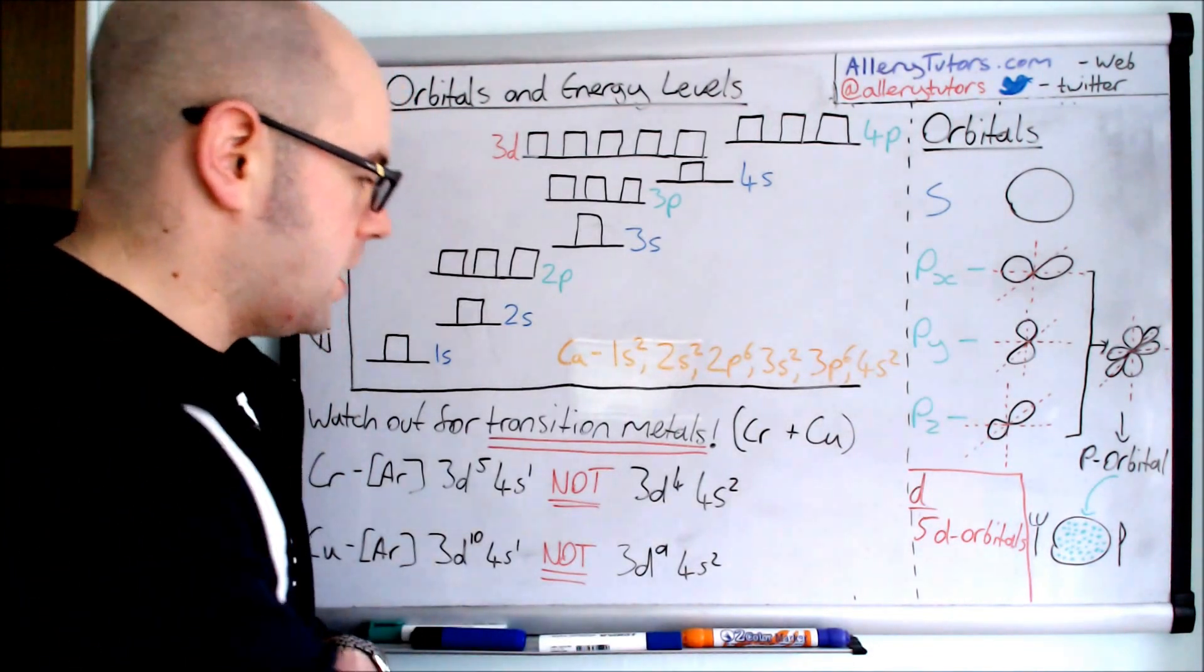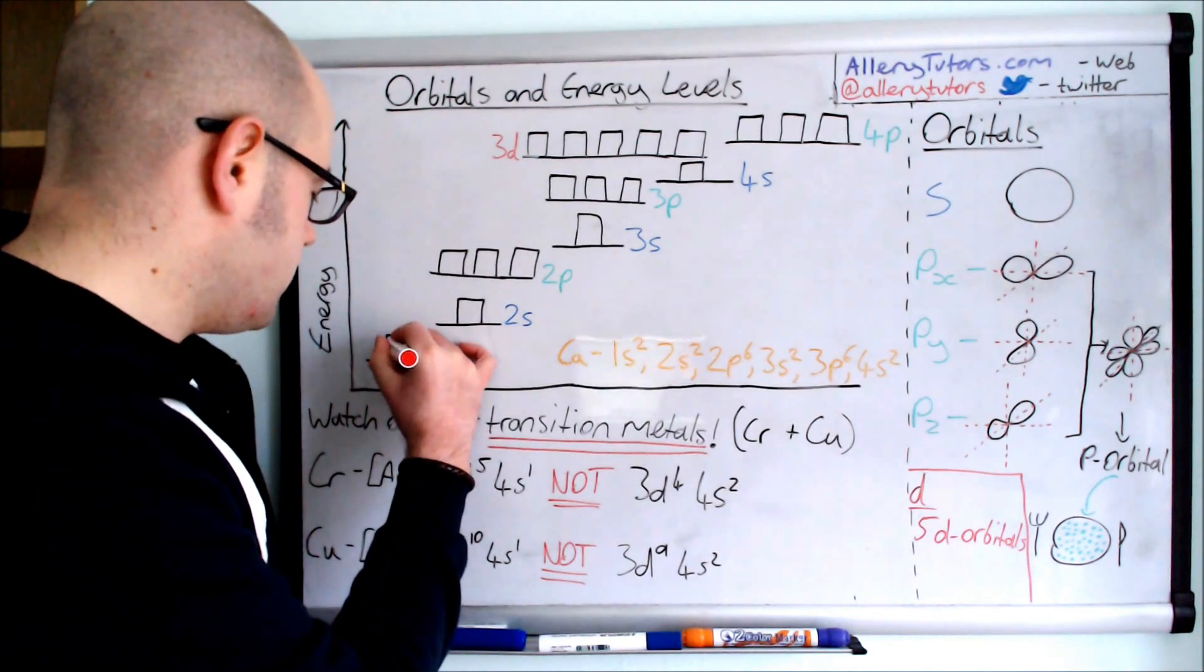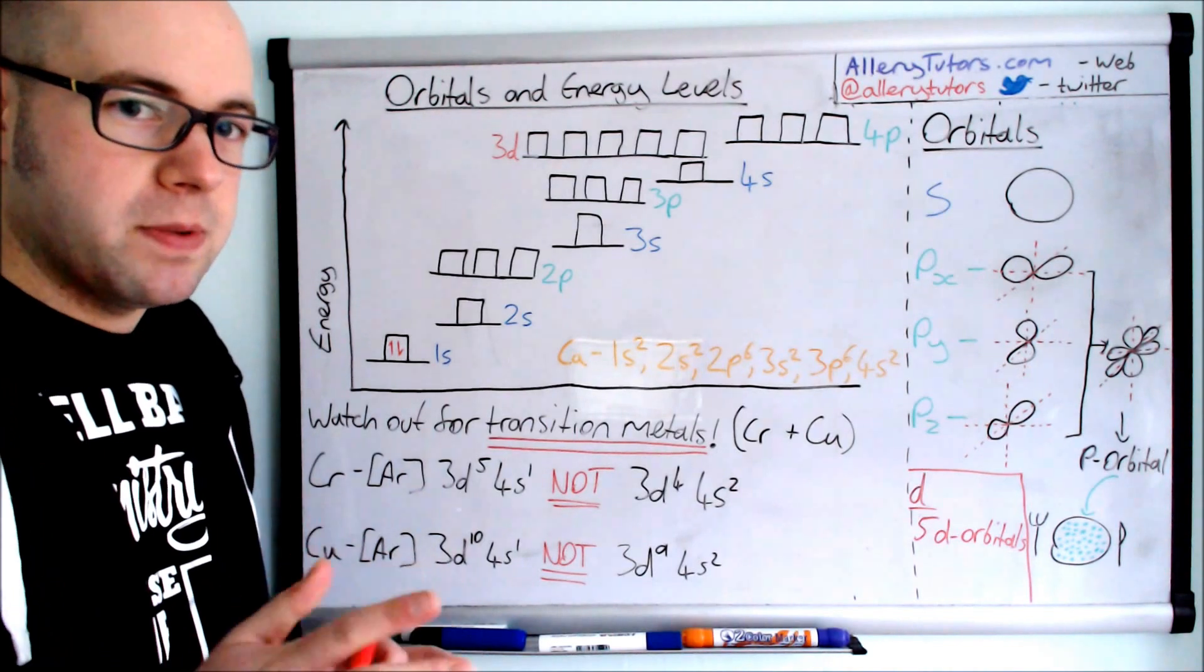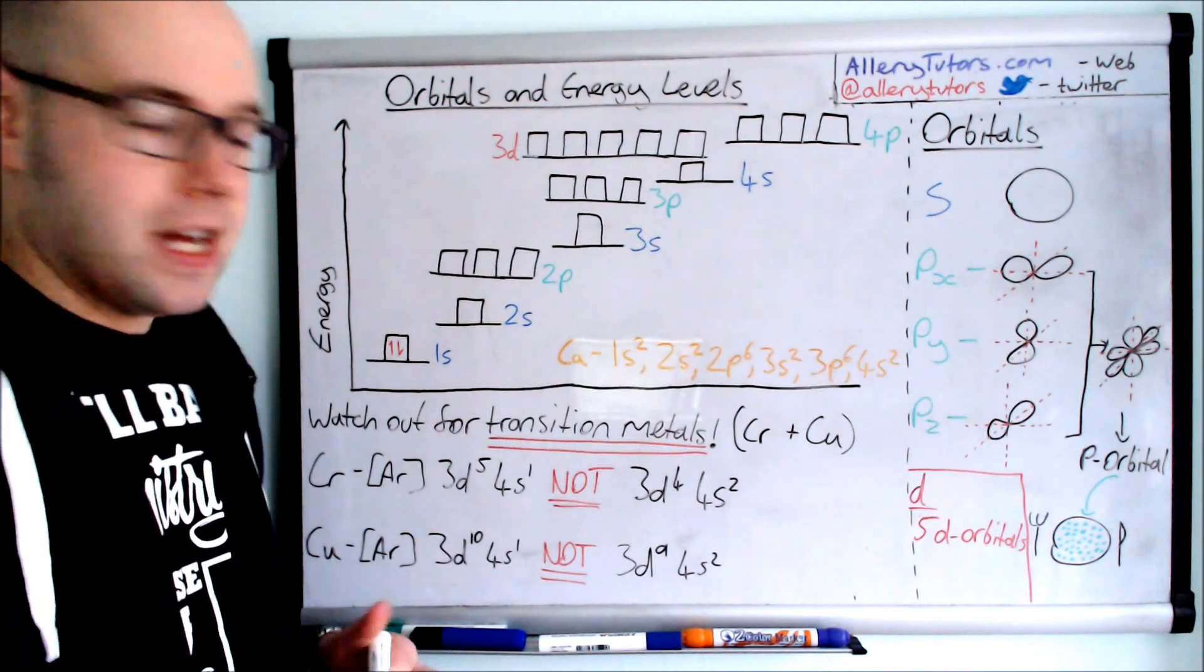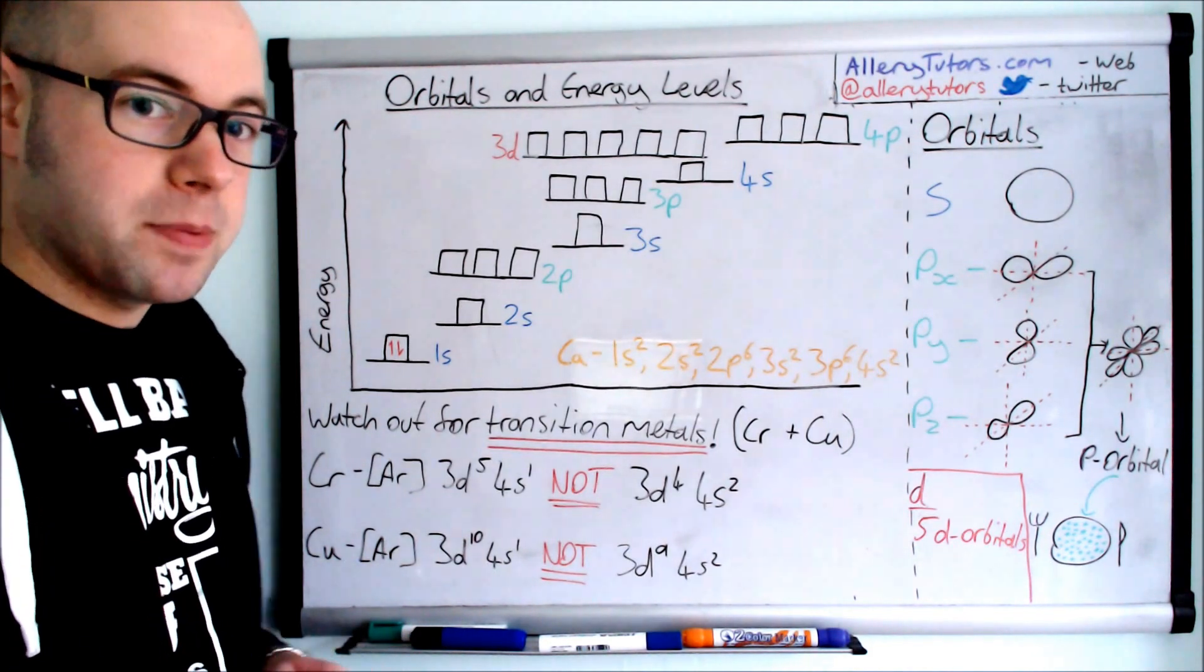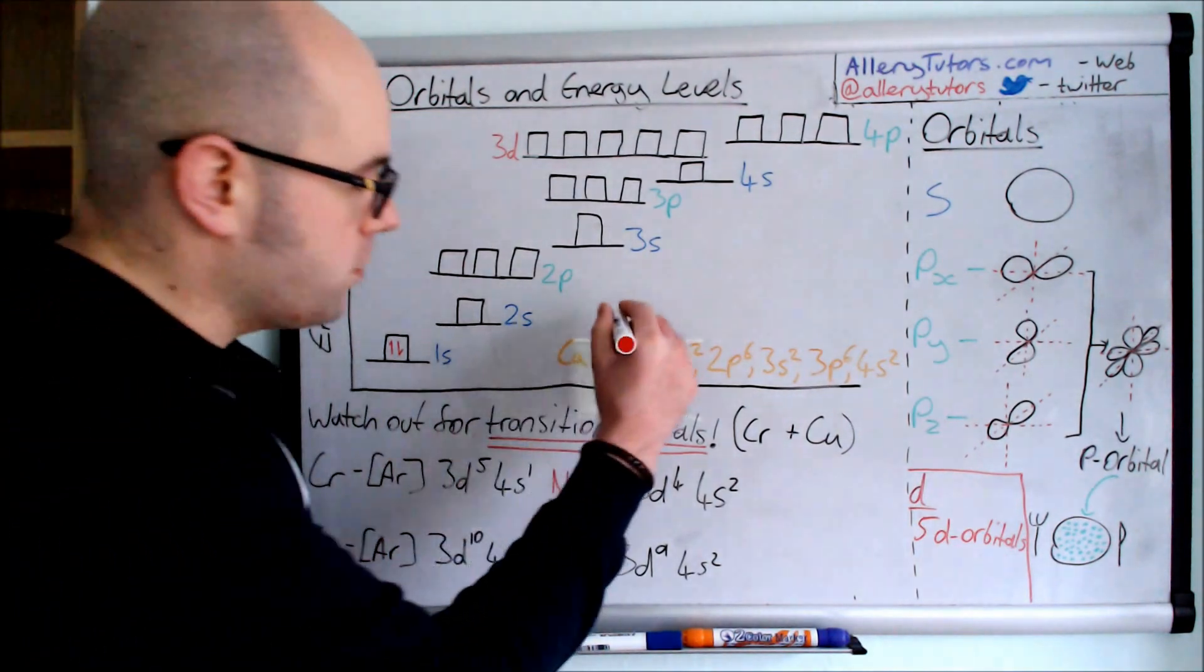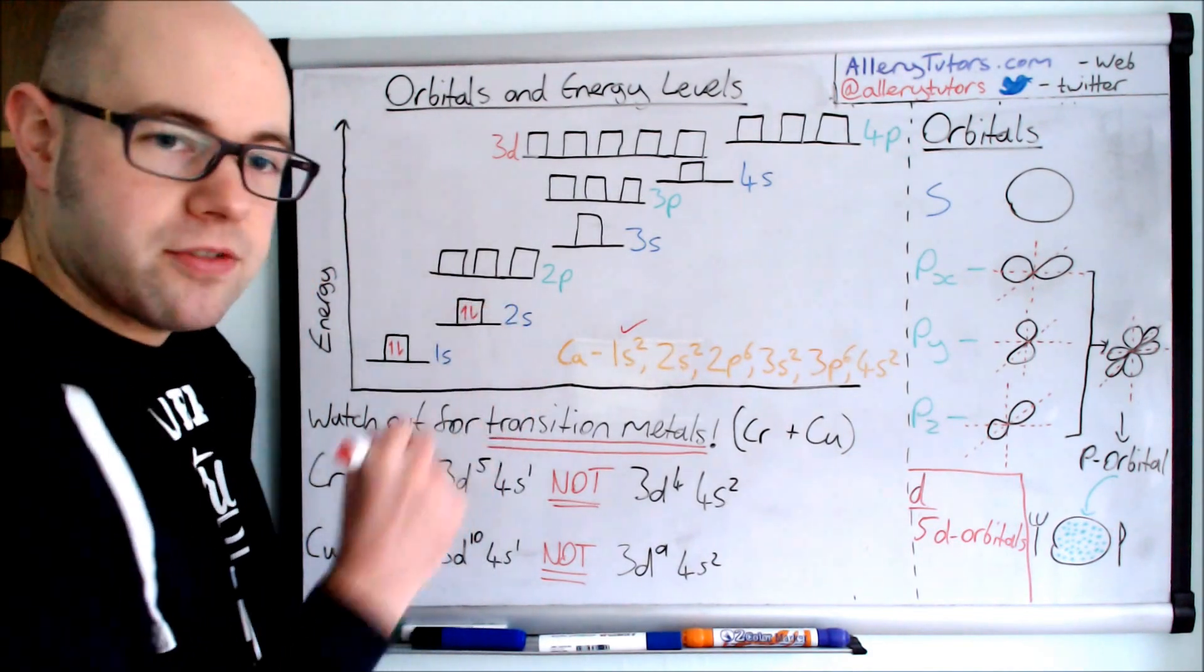We're going to start by putting in our electrons, and we draw electrons using arrows. We've got one arrow pointing up and one arrow pointing down, which tells us the spin of the electron. Hunt came up with a theory that said electrons, if they're pairing up, must spin in opposite directions. So we've done 1s2 and then we come on to 2s2, so we fill the electrons in there. Then we come on to 2p6.